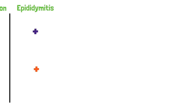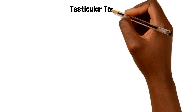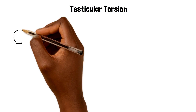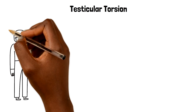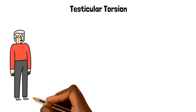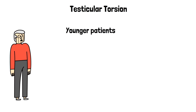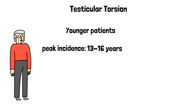Let's take a more detailed look into testicular torsion. This is a surgical emergency where the spermatic cord gets twisted, so patients here will most likely have a unilateral high-riding testicle. In addition to sudden onset testicular pain, patients may also have associated radiating abdominal pain, nausea, and vomiting. This is a condition we should always consider in younger patients who present with abdominal pain, as the peak incidence occurs between the ages of 13 to 16 and also during the neonatal period.